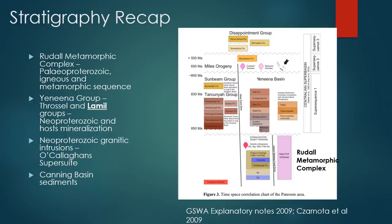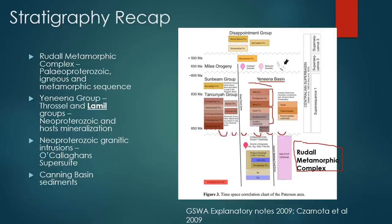This diagram shows all of that information together. We have the Rudale Metamorphic Complex as our metamorphic basement, then an unconformity — a big time gap — before the Unina Basin Group sediments overlie that. The Unina Group is split into two subgroups: the Frostle Range and the Lammel Group. It's the Lammel Group that we're interested in because it hosts the mineralisation at Telfer. We then intrude all of that with the O'Callaghan Super Suite granites, before depositing our Phanerozoic cover — the Canning Basin sediments, including the Disappointment Group.